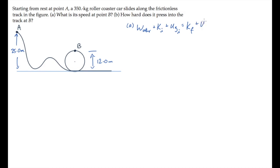The work-energy equation tells us that the work done by other forces plus the initial energies, kinetic plus the gravitational potential, equals the final energies.